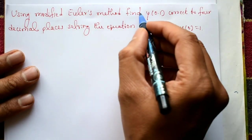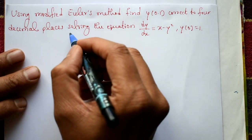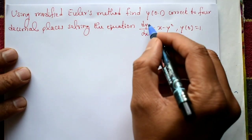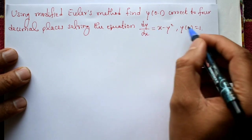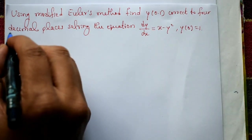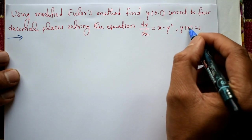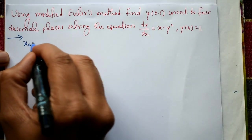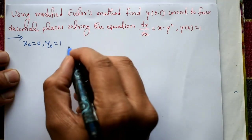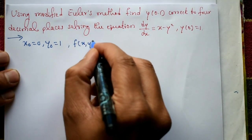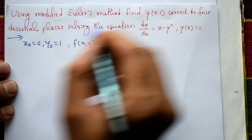Using the modified Euler's method, find y(0.1) correct to four decimal places. The given equation is dy/dx = x - y², a first order first degree ODE. The initial condition is x₀ = 0 and y₀ = 1, and f(x, y) = x - y².